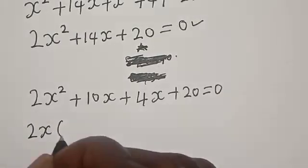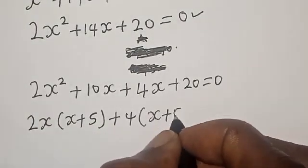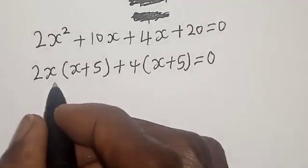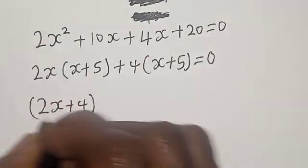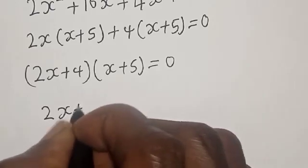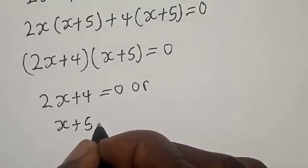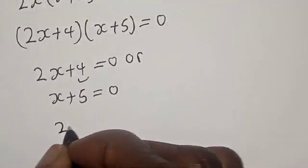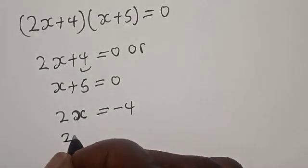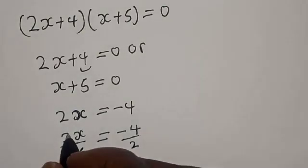Now we have 2x(x plus 5) plus 4(x plus 5) is equal to 0. Factoring out (x plus 5), we get (2x plus 4)(x plus 5) is equal to 0. From 2x plus 4 equals 0, we get 2x equals minus 4. Dividing both sides by 2, we get x equals minus 2.